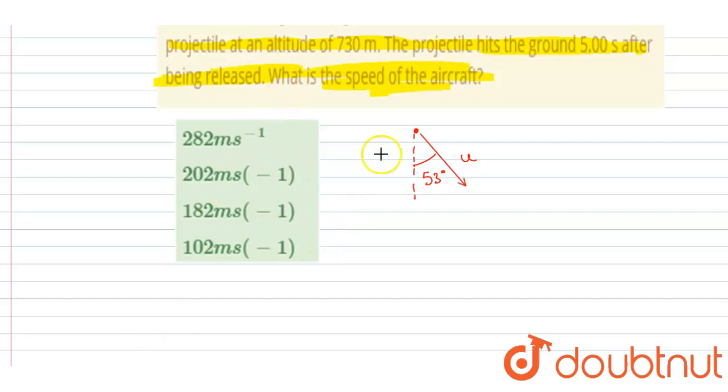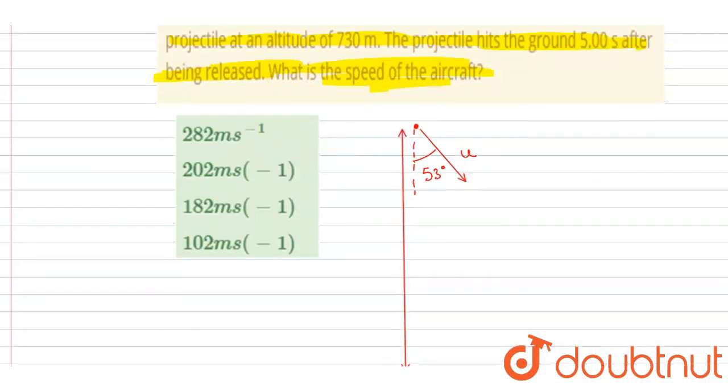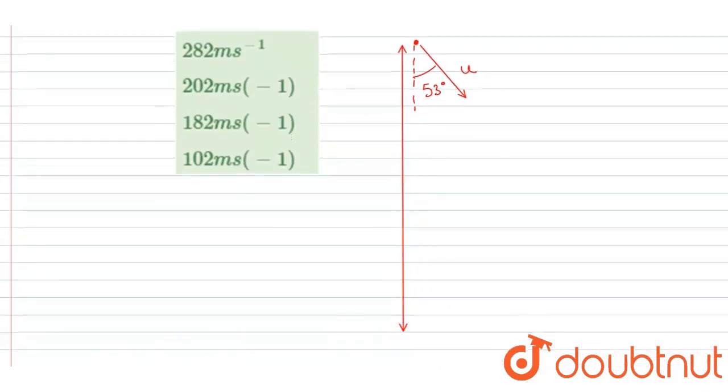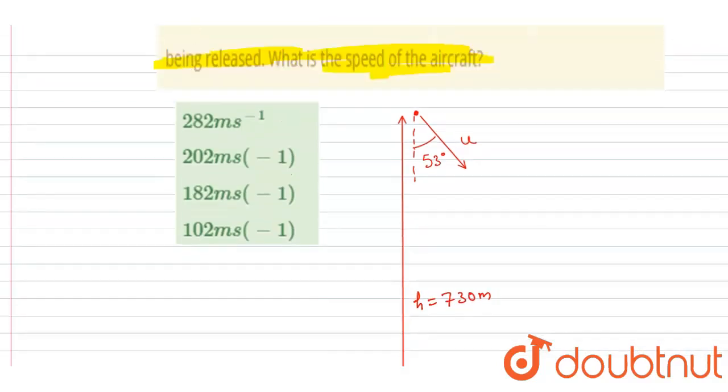Now we can apply the second equation of motion. If you see here, it is given that it takes five seconds to hit the ground, and the ground is at a distance of 730.